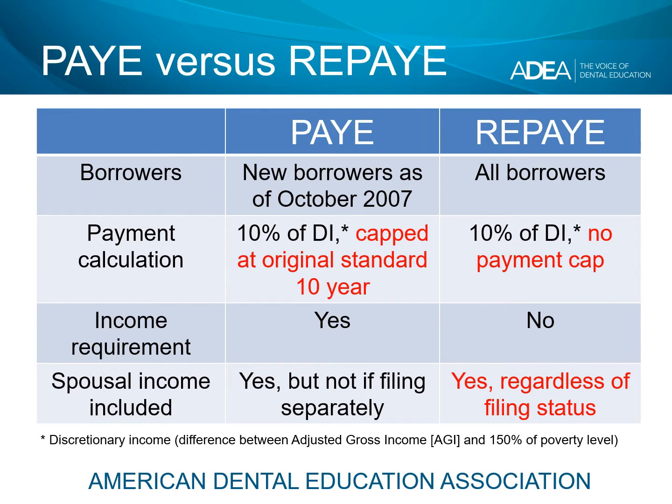There is an income requirement with Pays As You Earn. You have to demonstrate something called partial financial hardship, which is a threshold that looks at your debt, your income, and your family size. There is no such income requirement with REPAY, and that's why there's no payment cap with REPAY — you are always paying 10% of discretionary income.